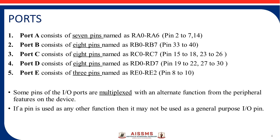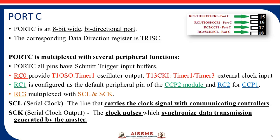Port C has 8 pins, Port D has 8 pins, and Port E has 3 pins. As discussed, every pin provides multiple functions — they are multiplexed with alternate functions. Port C is an 8-bit wide bidirectional port, and the corresponding data direction register is TRISC. When TRISC equals 0, the pin works as an input port, and when TRISC equals 1, the pin works as an output port.